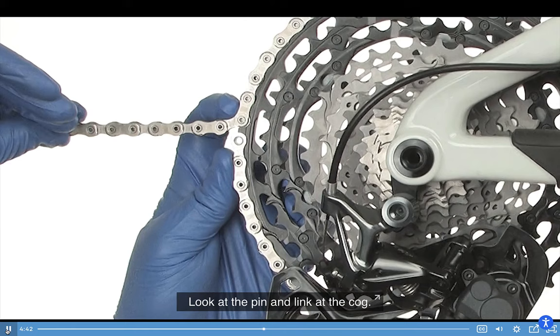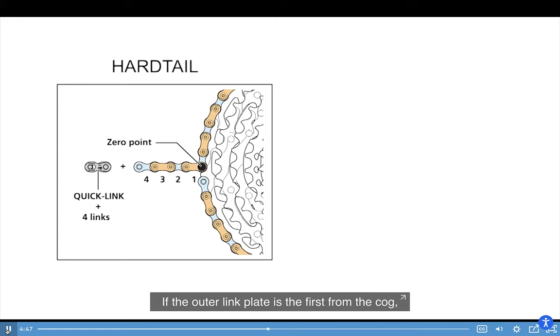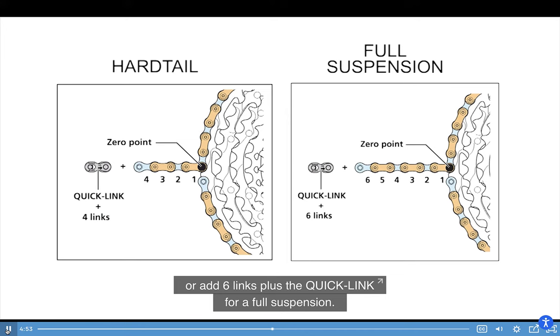Look at the pin and link at the cog. If the outer link plate is the first from the cog, add 4 links plus the quick link for a hardtail, or add 6 links plus the quick link for a full suspension.